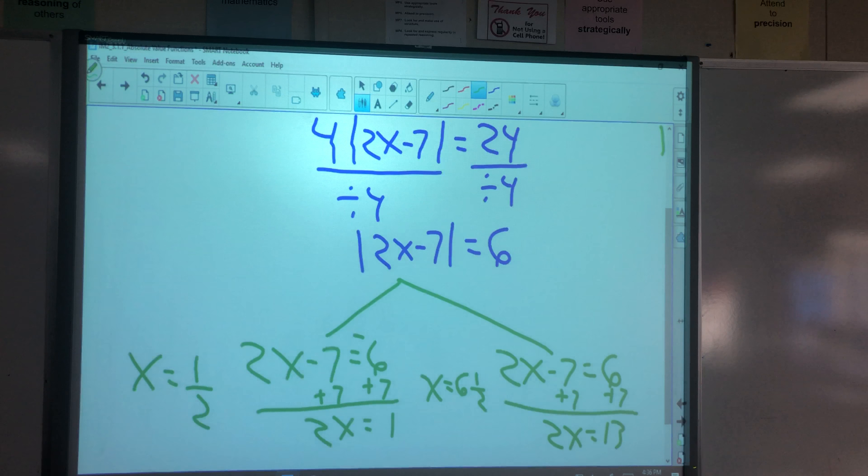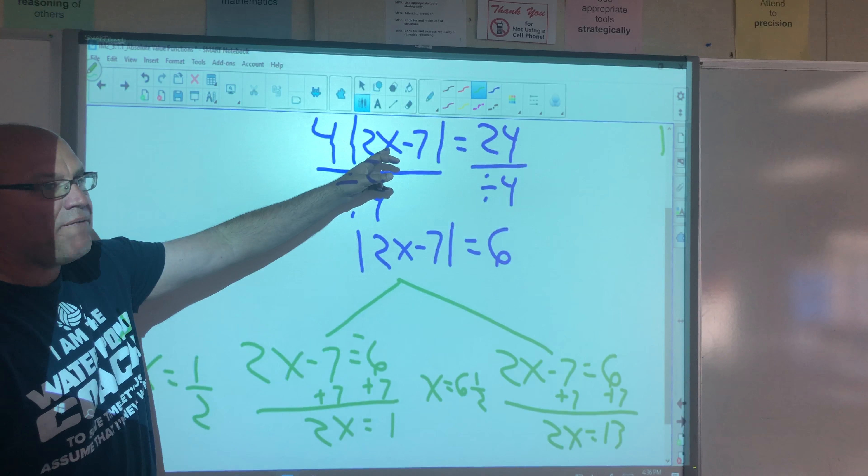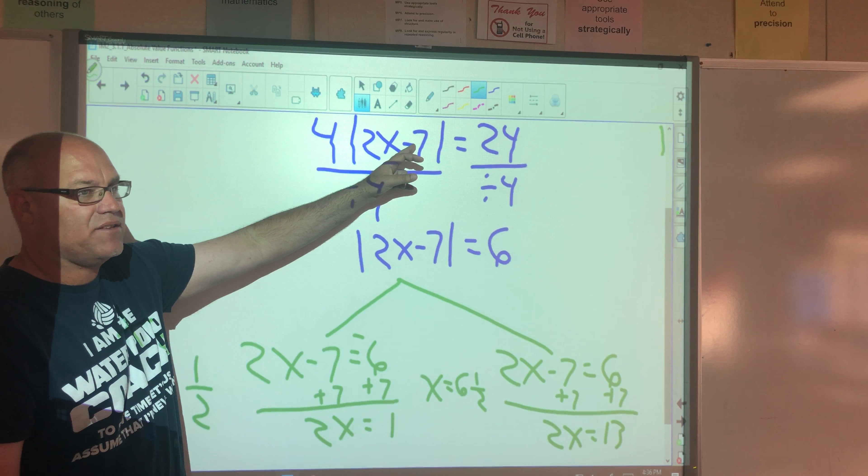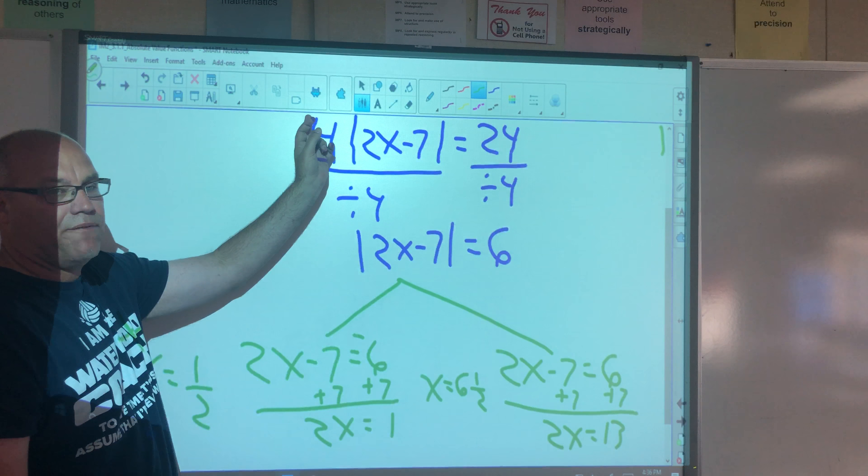Can we check them? Sure. 2 times 1 half is 1. 1 minus 7 is negative 6. The absolute value of negative 6 is 6. 6 times 4 is 24. Check.